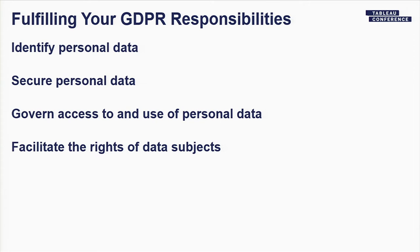You can break GDPR compliance down into four big steps. First, you need to identify all of the personal data you have — this is often the most difficult part, especially in ungoverned data environments. Second, you need to make sure that data is secure and not easily hacked. Third, you need to govern access to and use of that data, controlling who can copy or print it. Fourth, you need to be able to facilitate the rights of the data subjects — the individuals whose data you hold.